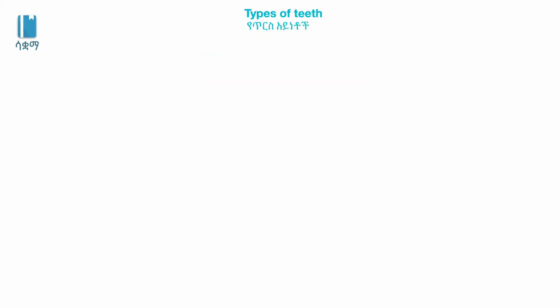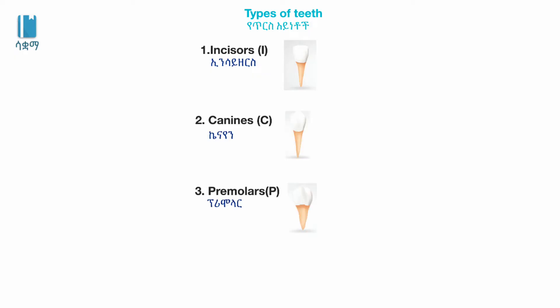Human beings have 4 types of teeth: 1. Incisors, 2. Pre-molar, 3. Molar.